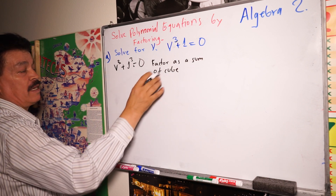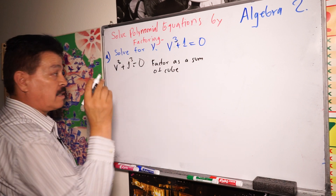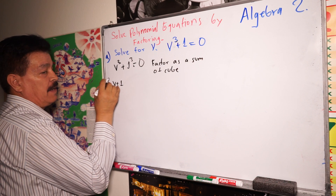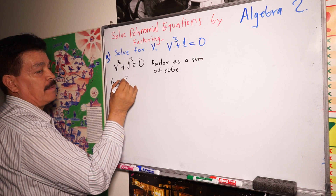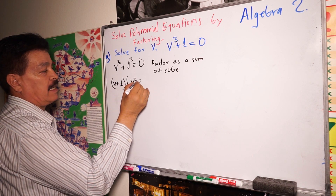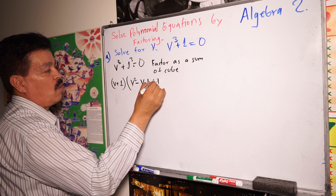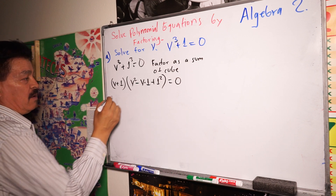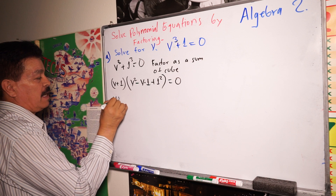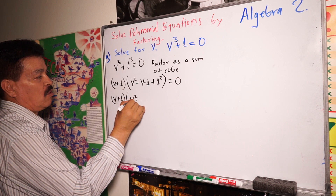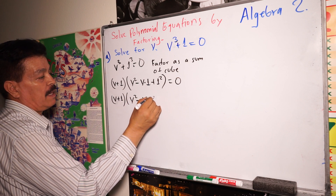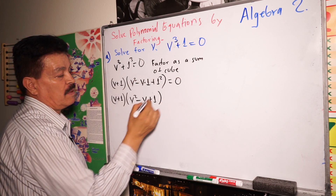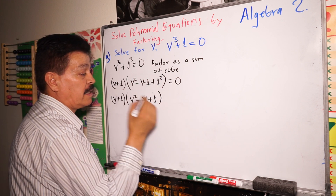Developing like the rule I showed you before, we are going to have B plus one, times B squared minus B times one plus one squared equals zero. Simplifying, it's B plus one times B squared minus B plus one equals zero. One squared is one times one, which equals one.